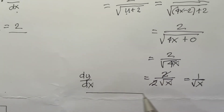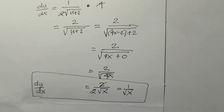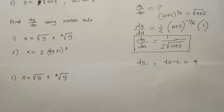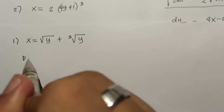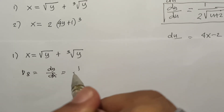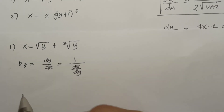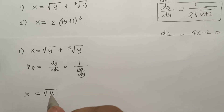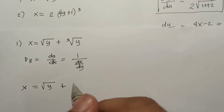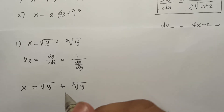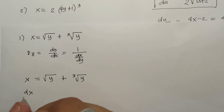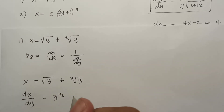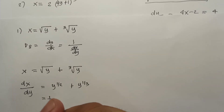The next problem is to find dy/dx using the inverse rule. The inverse rule formula D8 states: dy/dx = 1 / (dx/dy). We have x = √y + ∛y. First, find dx/dy by expressing the terms as y^(1/2) + y^(1/3) and differentiating: (1/2)y^(−1/2) + (1/3)y^(−2/3).